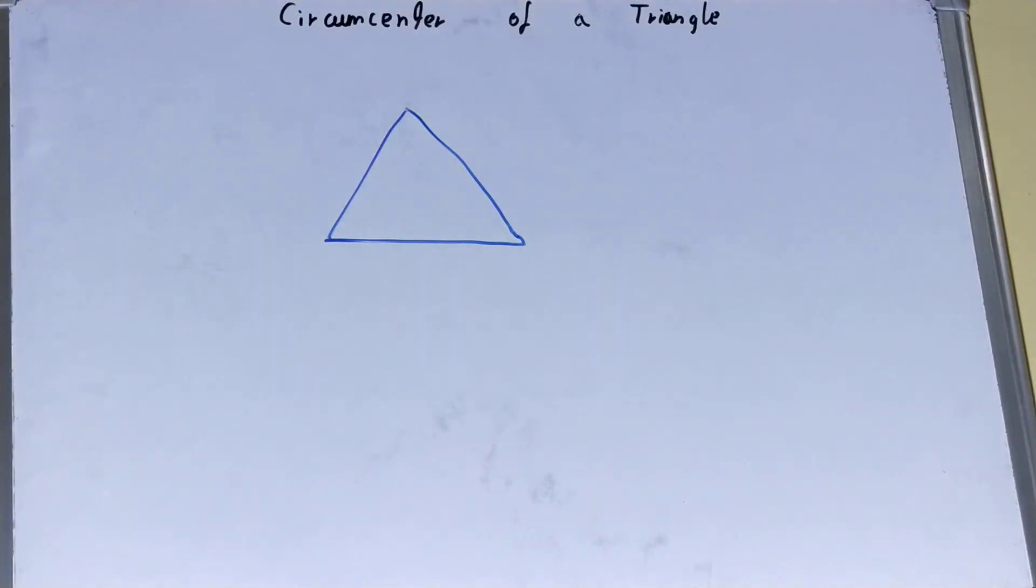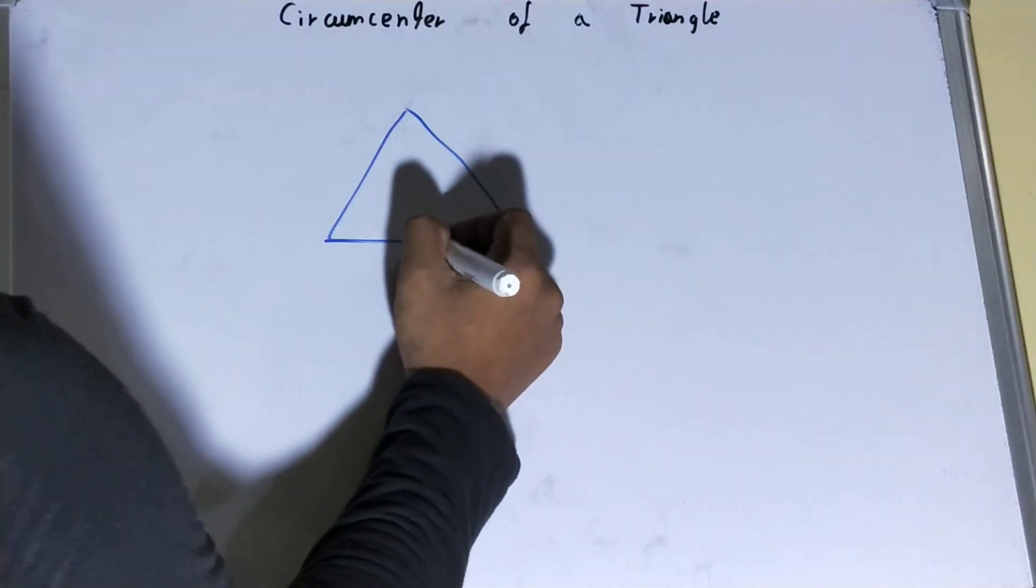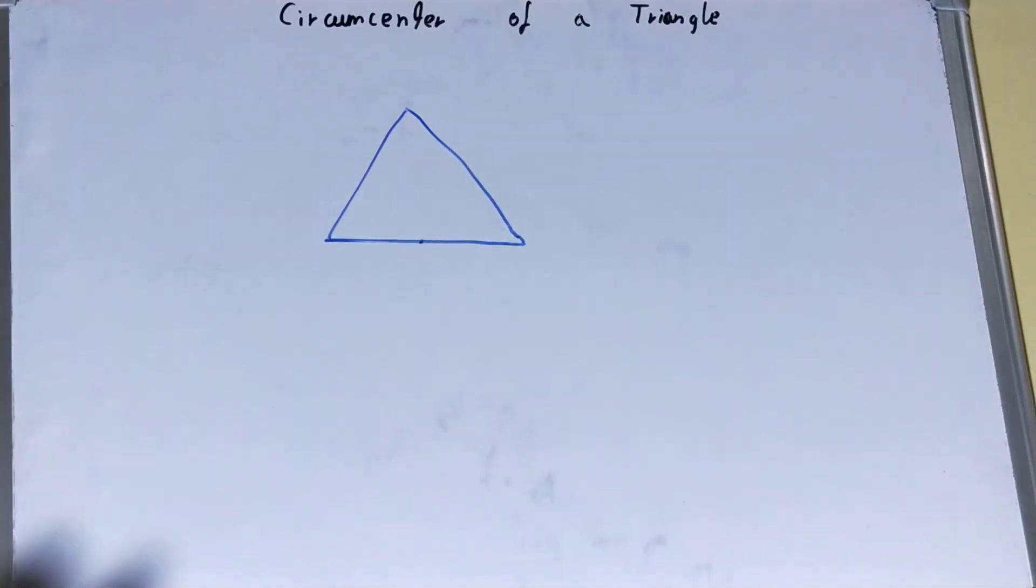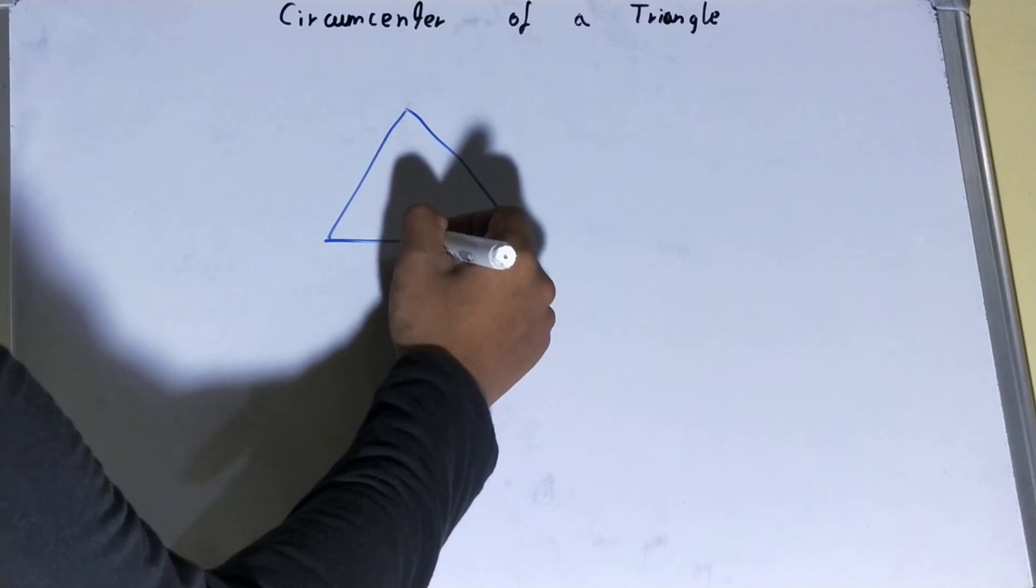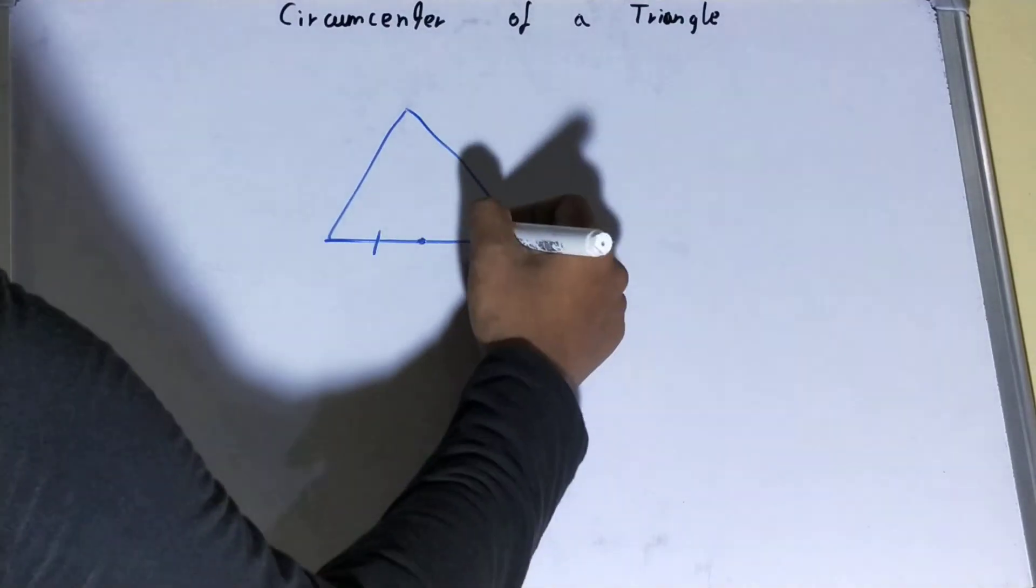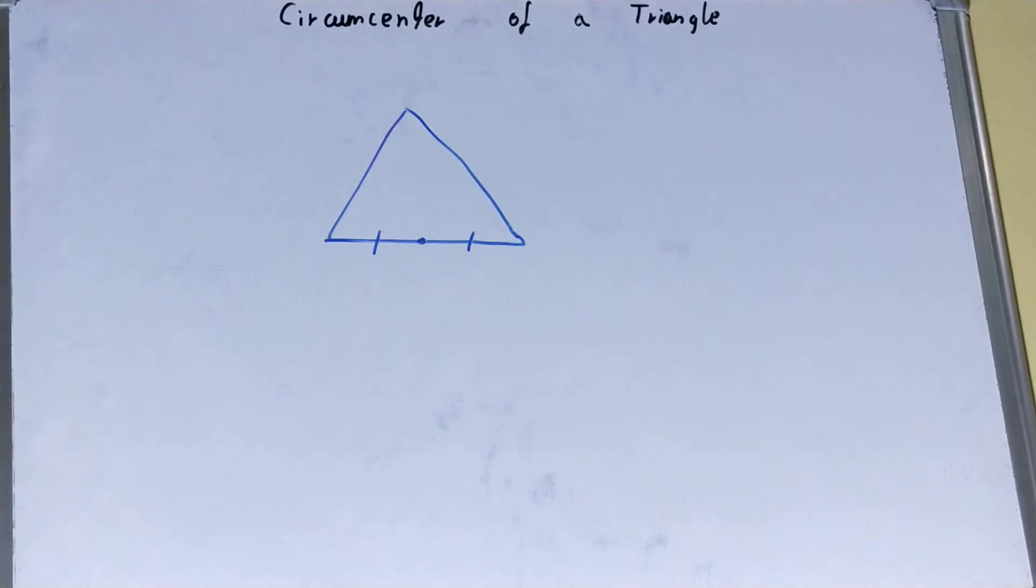So how are we going to do this? The first step is to find the midpoint of each of the sides. Let's take this side, so the midpoint will be the middle point. That is, if we draw a mark or mark a point on the side, then this one will be equal to this one. That is what the definition of midpoint is.